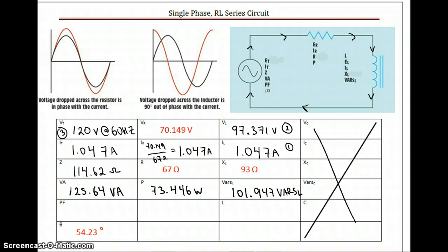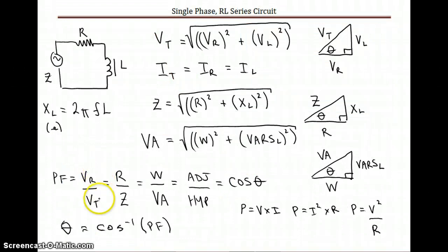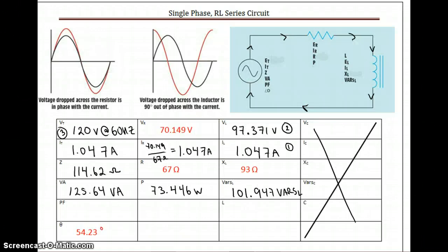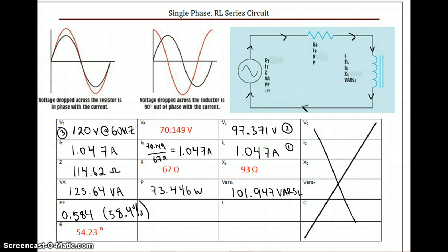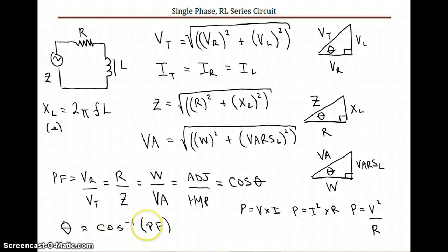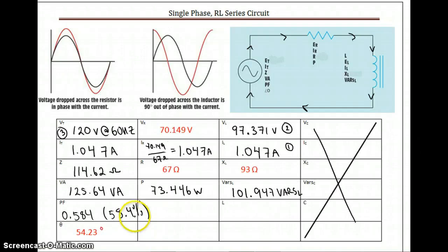Now we find the power factor using any of the ratios — voltage resistance over total voltage, resistance over impedance, or watts over VA. Taking watts over VA: 73.446 ÷ 125.64 = 0.584, meaning the circuit is 58.4% efficient. Using inverse cosine of the power factor, the total voltage and total current are 54 degrees out of phase.